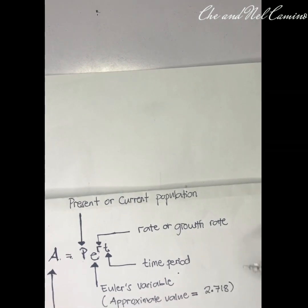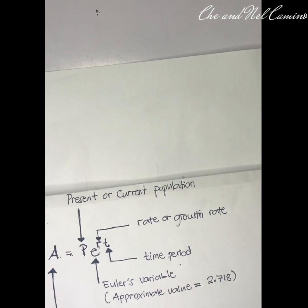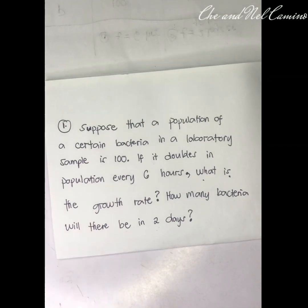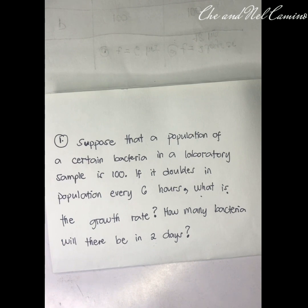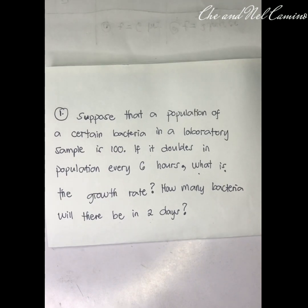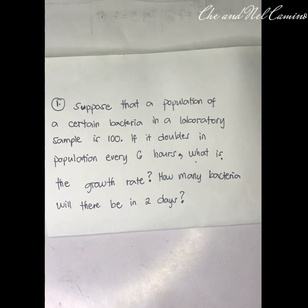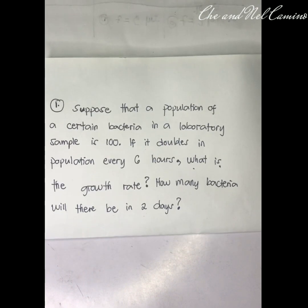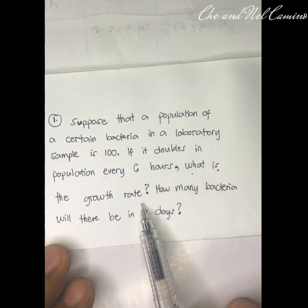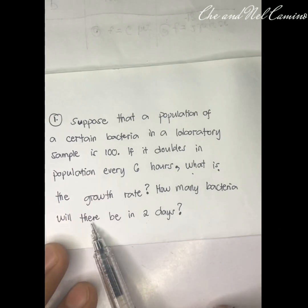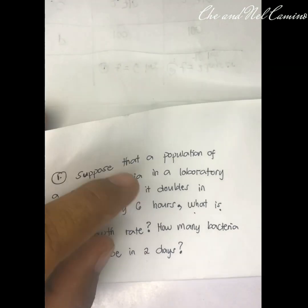R is the rate or growth rate, and T is the time period. This is our exponential growth formula. Problem number one: suppose that a population of a certain bacteria in a laboratory sample is 100. If it doubles in population every six hours, what is the growth rate, and how many bacteria will there be in two days?